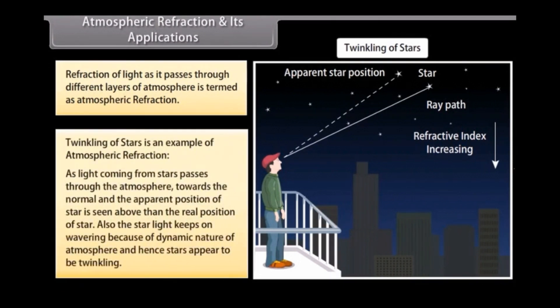As light from stars passes through the atmosphere, it bends towards the normal, and the apparent position of a star is seen above its real position. Also, because of the dynamic nature of the atmosphere, starlight keeps wavering, which is why stars appear to be twinkling.